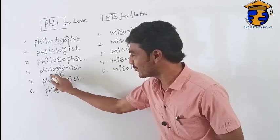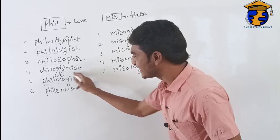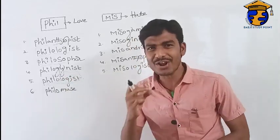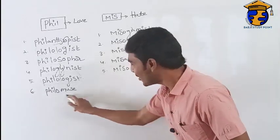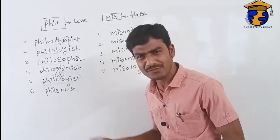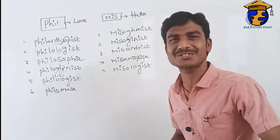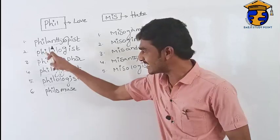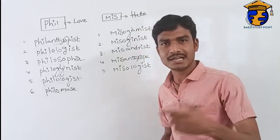The next word is 'philologist' — here 'logo' means long ways, so a lover of long ways is called a philologist. And next, 'philomusist' — 'phil' means love and 'muse' means music, so a lover of music is called a philomusist. These are words beginning with the prefix 'phil.'